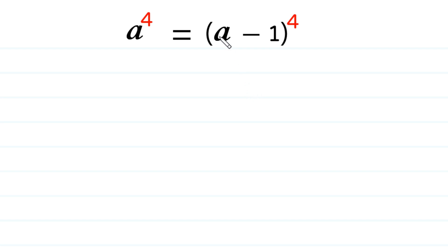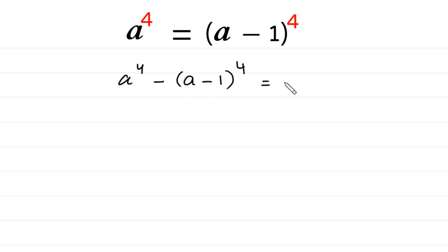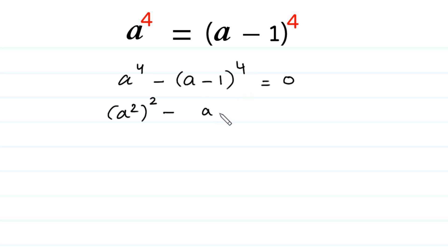First of all, we shift this A minus 1 whole to the power 4 to the left side. So A to the power 4 minus A minus 1 whole to the power 4 is equal to 0. Next, we can write A to the power 4 as A squared, whole to the power 2, minus A minus 1 whole to the power 4 as A minus 1 whole squared, whole to the power 2, equals 0.